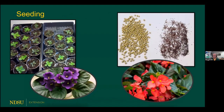African violets can be started by seed. If you want hundreds of African violets, that's a good way to get them fairly cheaply — you can order African violet seed in different colors and types. It does take about a year to a year and a half to get from seed to a nice blooming-size African violet, so it requires patience.